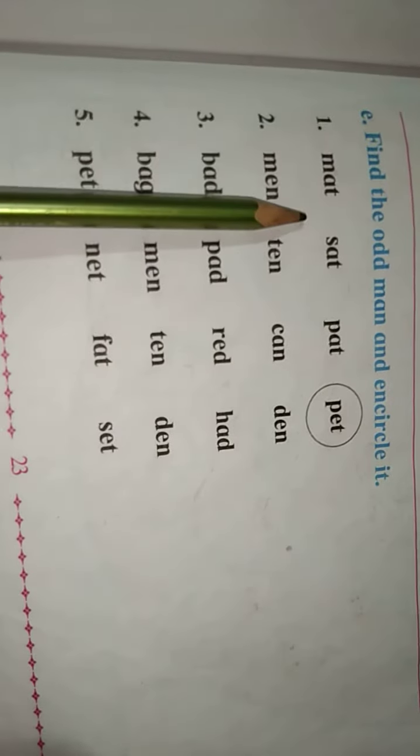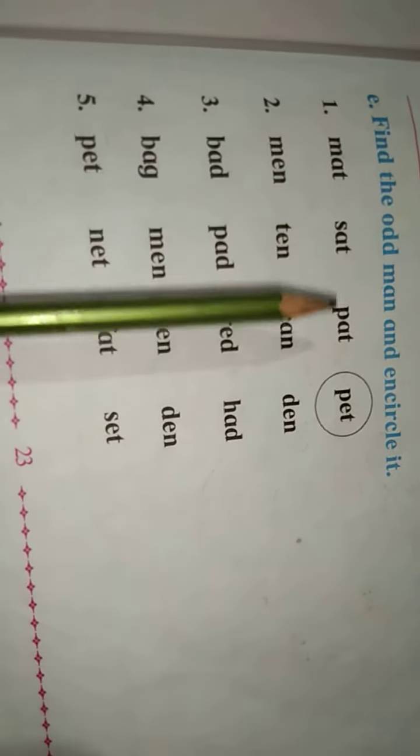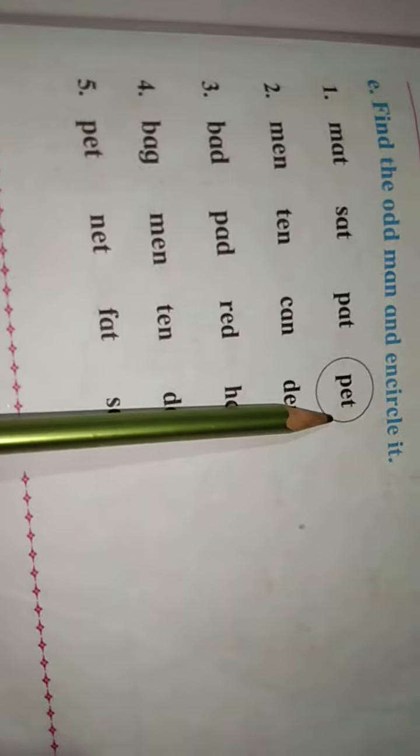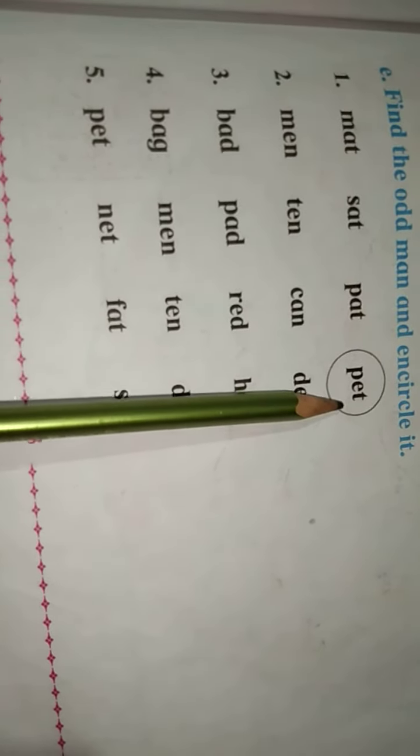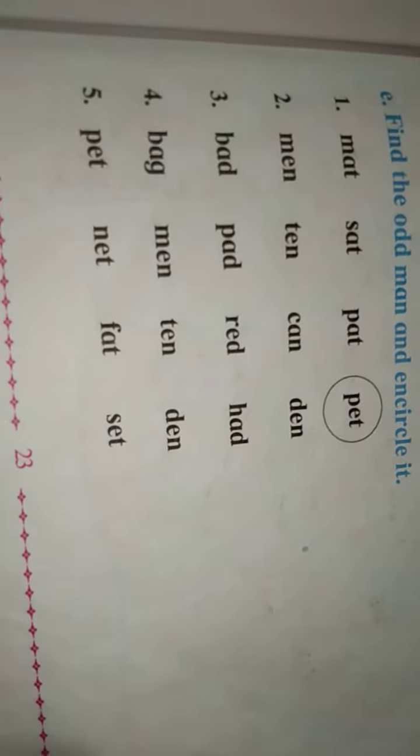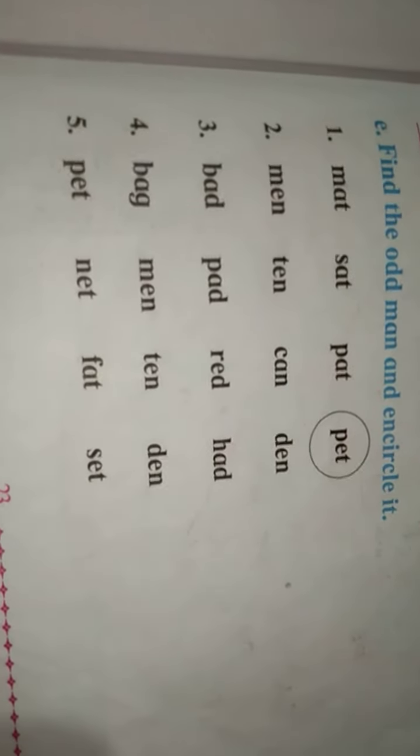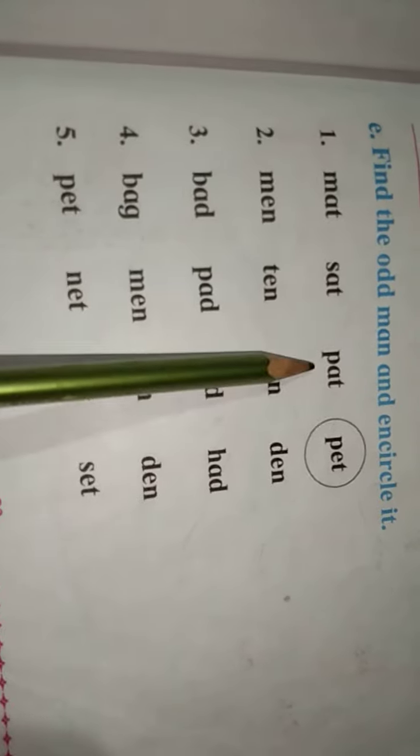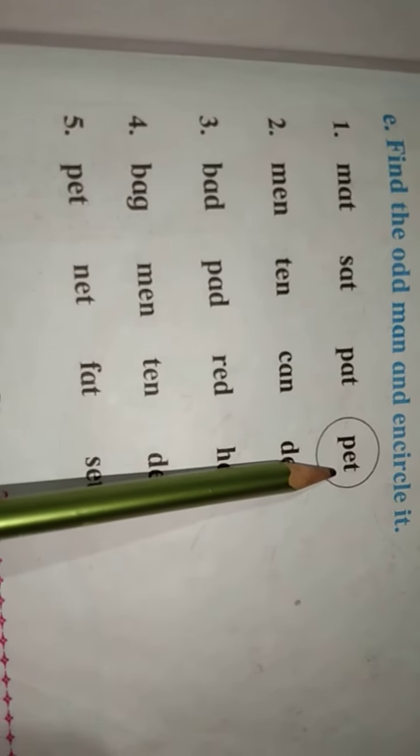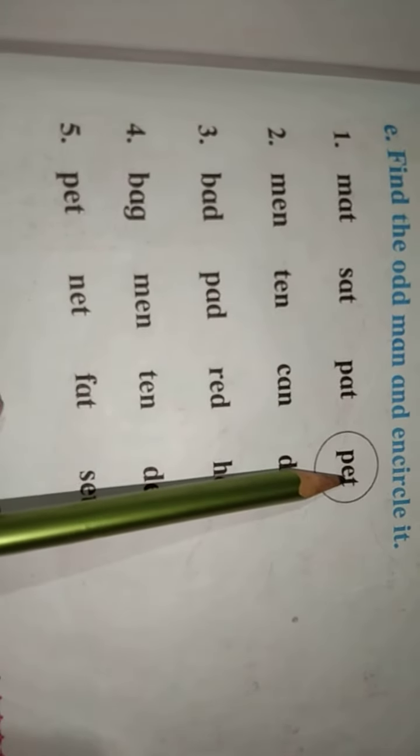Here observe first: mad, sad, pat and pet. Here which word is different having? Pet, that like pronunciation. So that three words pronunciation is 'a', but fourth is 'e'. So that word is different.